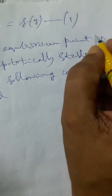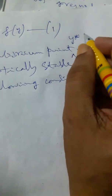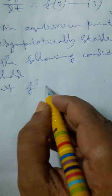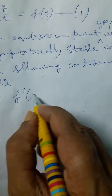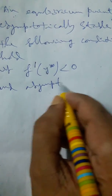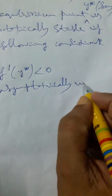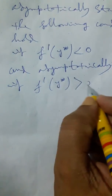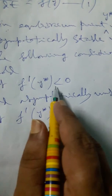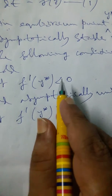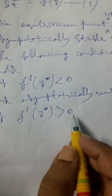If we consider an equilibrium point y* (y-star), it is asymptotically stable if the derivative f'(y*) is less than 0, and asymptotically unstable if f'(y*) is greater than 0. So we have two results: the derivative of f at the equilibrium point y* — if it is less than 0, we call it asymptotically stable; if greater than 0, we call it asymptotically unstable.